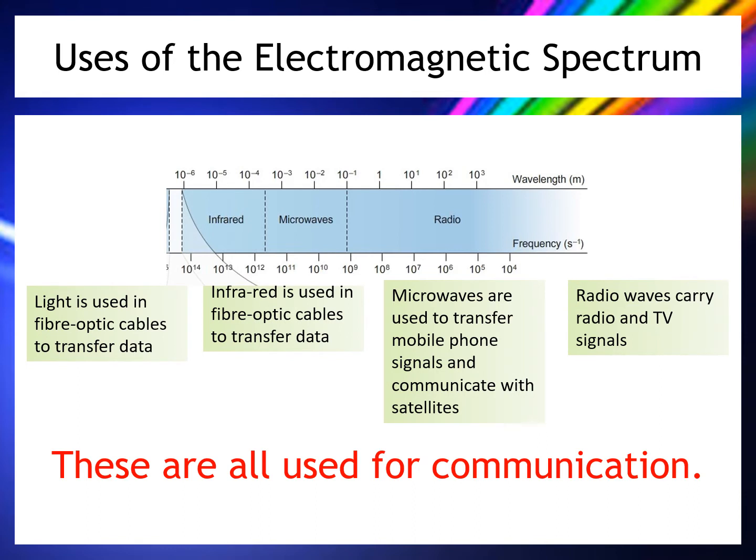The key point about waves in this part of the electromagnetic spectrum is that they're all used for communication of one kind or another — whether transferring data through fiber optic cables, via mobile phone, satellite signal, or radio and TV signals. They're all transferring information from one place to another, whether that's computer data or an image on your television screen.